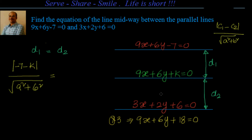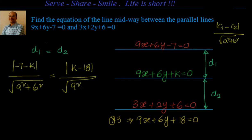We get mod of minus 7 minus k, divided by square root of 9 squared plus 6 squared, equal to d2. d2 is the distance between the parallel lines 9x plus 6y plus k equal to 0 and 9x plus 6y plus 18 equal to 0. Using the same formula c1 minus c2, it will become mod of k minus 18, divided by square root of 9 squared plus 6 squared.